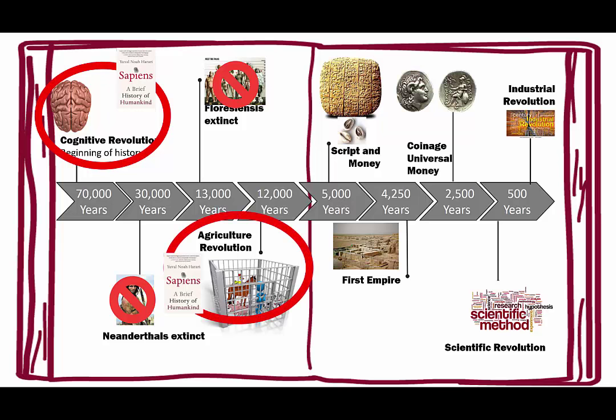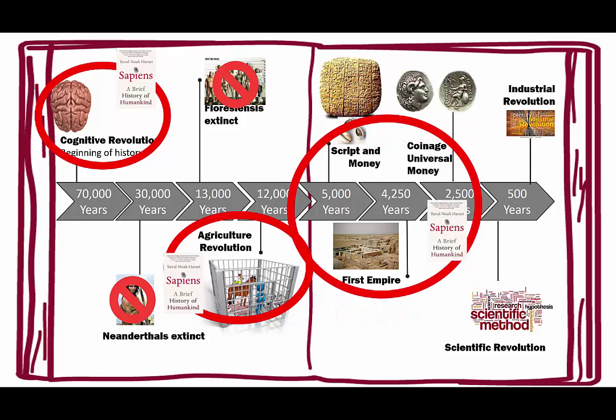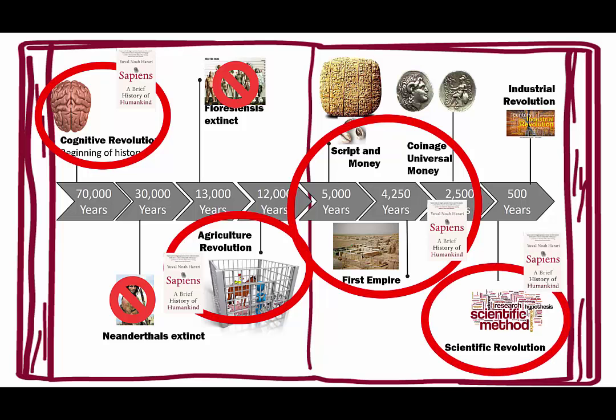The second part is about the agricultural revolution, and we'll have additional videos on that. The third part covers empire, script and money, and coinage — what he calls the unification of humankind — and we'll talk about those when we get to them. And finally he talks about the scientific revolution, which was 500 years ago.